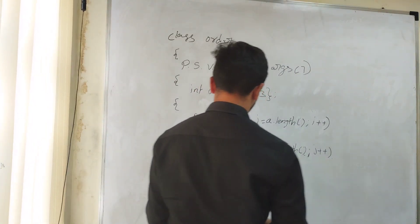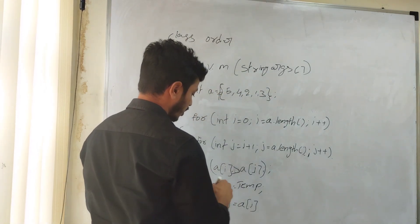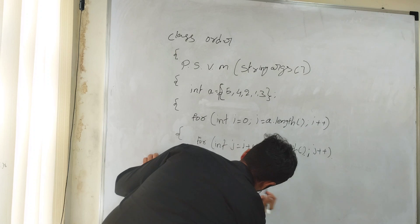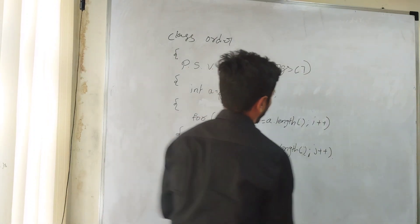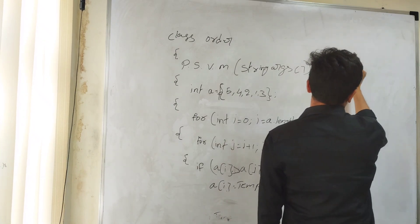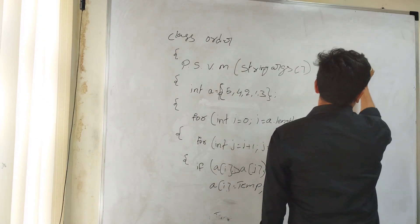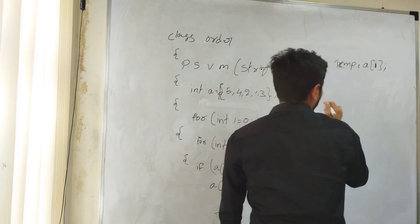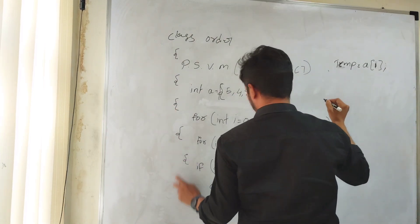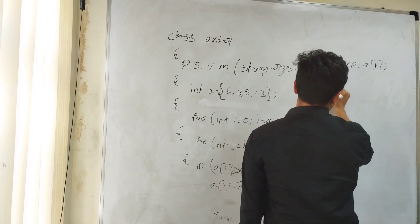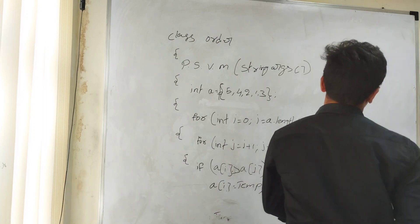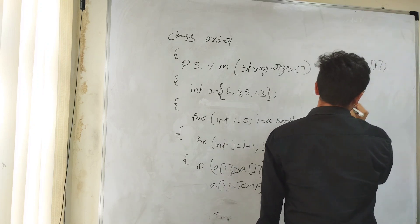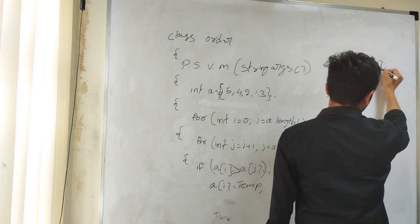Now write down the logic properly. What is the swapping technique logic? Temp is equal to a[i]. Write down the logic properly: temp = a[i], a[i] = a[j], a[j] = temp.